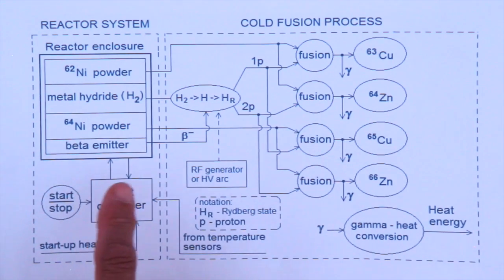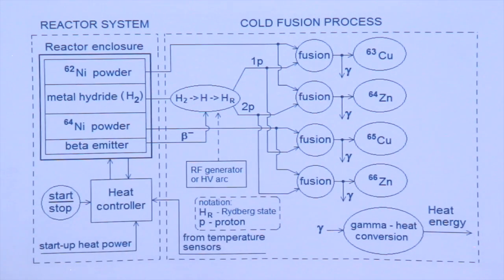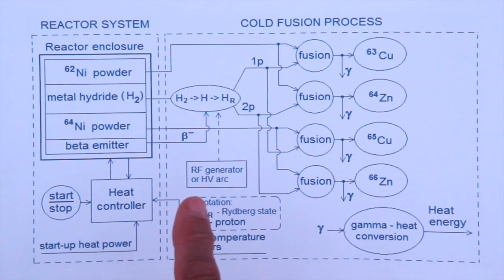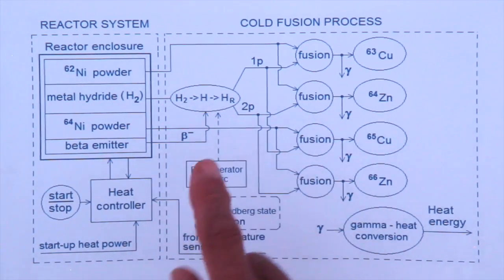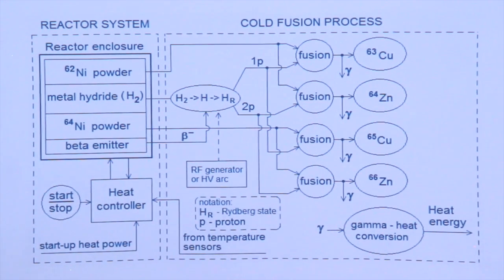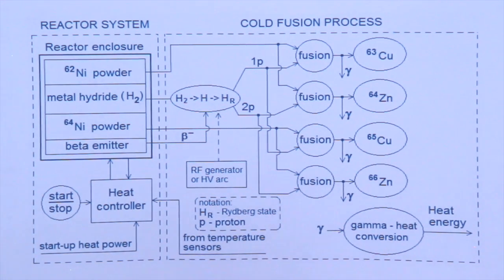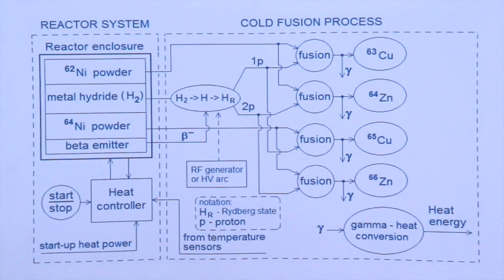The beta emitter should be a minus beta particle. Why? Because it only needs to create a Rydberg state. If it is a plus beta particle, the electron could be captured by the positron and produce some oscillation. But we need a Rydberg state, which is a special state of the hydrogen atom — one proton and one electron — where according to my theory the electron is in a quite different, distinguishable orbit.